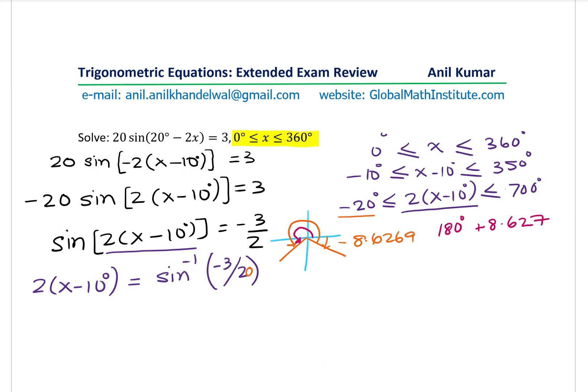So that is 188.627. And here we have minus 8.627. So those are the two angles which we have. Now, period for sine is basically 360 degrees. So we can add 360 degrees to this to get the other results.